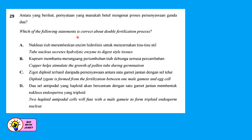Question 29: which statement is correct about the double fertilization process in plants? Option A — the tube nucleus secretes hydrolytic enzymes — is not related to double fertilization. Option B — copper stimulates pollen tube growth — is not part of double fertilization. Option C — a diploid zygote is formed from fertilization between one male gamete and one egg cell — is correct, just as in humans and animals. Option D mentions antipodal cells fusing with a male gamete to form the triploid endosperm nucleus, which is incorrect. Answer is C.